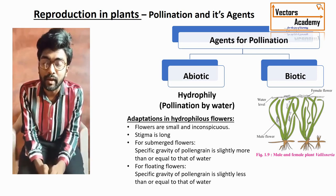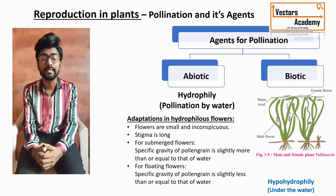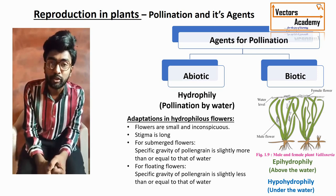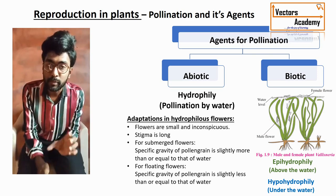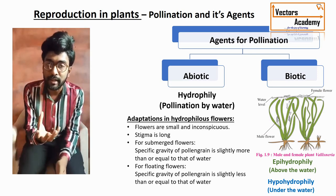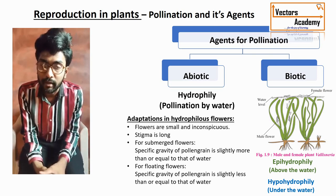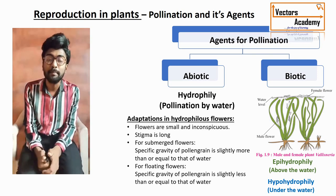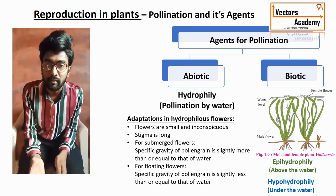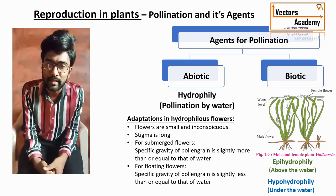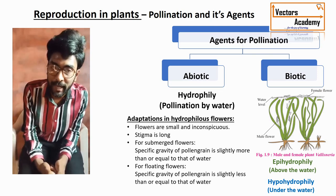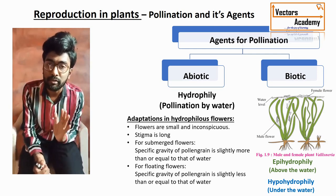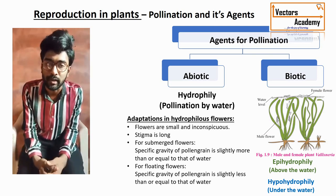Hydrophily has two types. Hypohydrophily takes place in submerged flowers — pollination occurring below the water surface in submerged hydrophytes. The best example is Ceratophyllum. Epihydrophily takes place above the water surface, and the best example is Vallisneria.